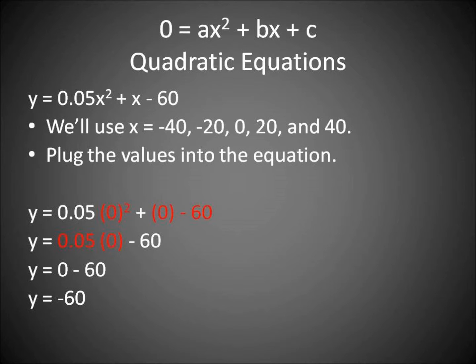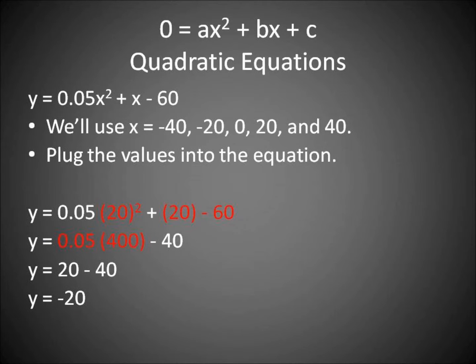Let's plug in 20 now. 20 squared plus 20 minus 60 will give us 400. 0.05 multiplied by 400 is 20 minus 40, giving us Y equals negative 20.